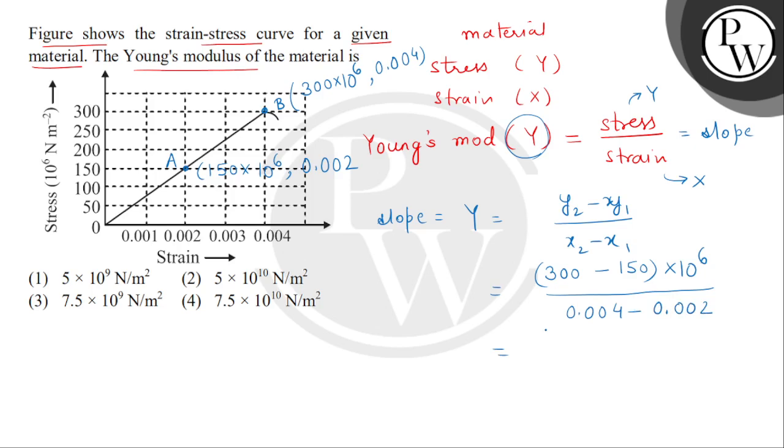We can get 10 to the power 6 newton per meter square and denominator, we can get 4 minus 2. It means 2 multiplied by 10 to the power minus 3. Here we can get this fraction of 75 multiplied by 10 to the power 9 newton per meter square, which is the final value of Young's modulus.